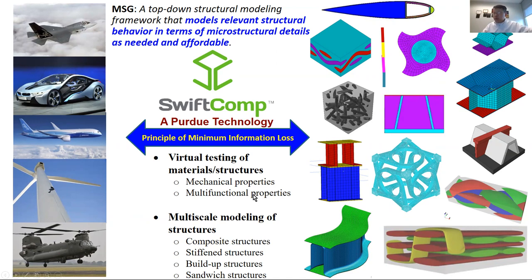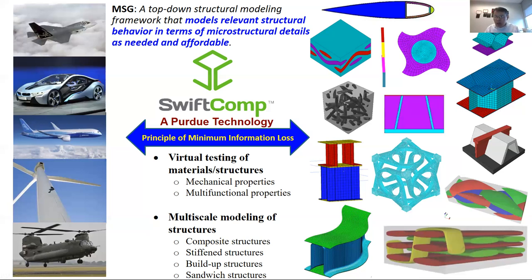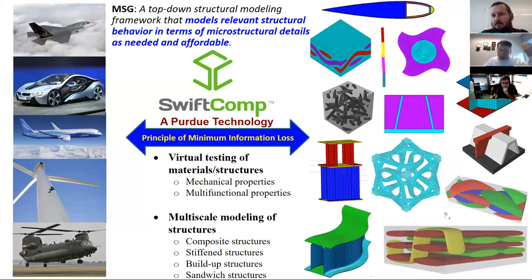MSG enables virtual testing of materials and structures — not only for mechanical properties but also for multifunctional properties — and can do multi-scale modeling of composites, built-up structures, and sandwich structures. With this code, you can take your favorite finite element code and deal with all the advanced materials and structures. That concludes the main lecture; I'll now take a few questions, then we'll go to the hands-on demonstration.